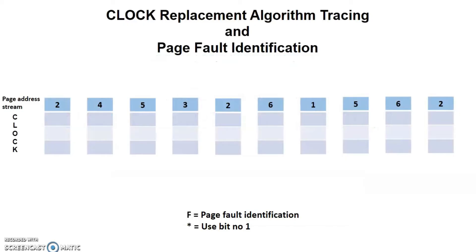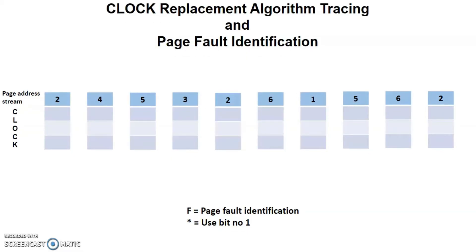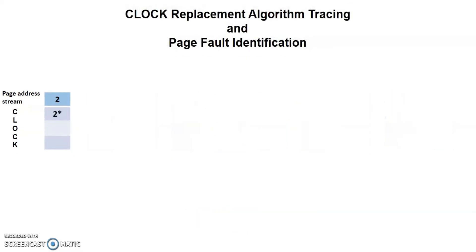As you can see, the page address stream has 3 empty frames. Later on, we'll go through the process of filling in the pages in the provided frames. Note that the asterisk symbol indicates 1 use bit. If there is no asterisk means that there is a 0 use bit. The letter F indicates a page fault that occurs after the frame allocation is filled. Without further ado, let's get right into it.